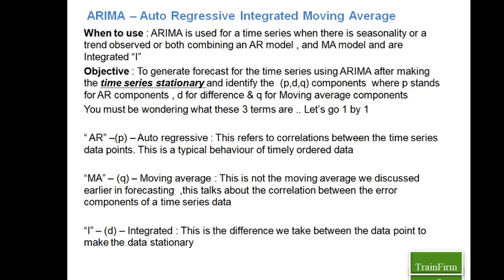We need to identify the level of correlation between data points, and we need to know where exactly these correlations happen — whether it's a first-lag or second-lag correlation. We need to know till which point that correlation exists in this time series data, and those many components are to be used in our ARIMA model to create the forecast.